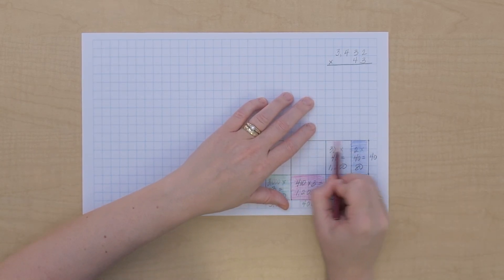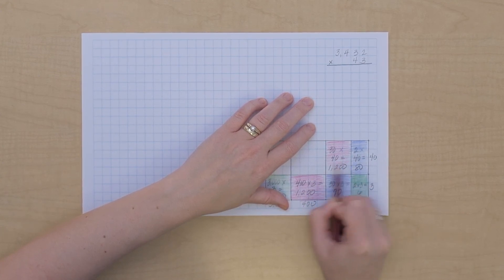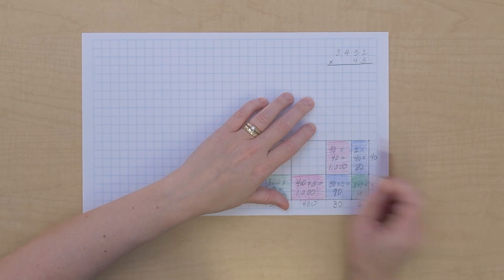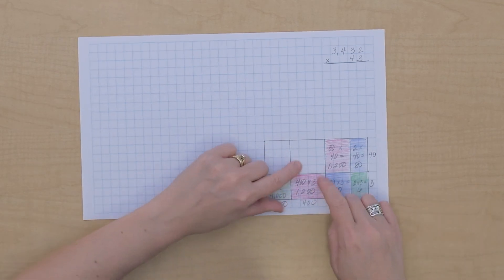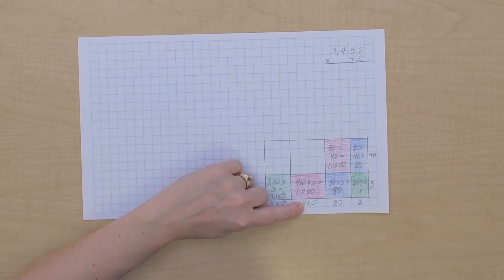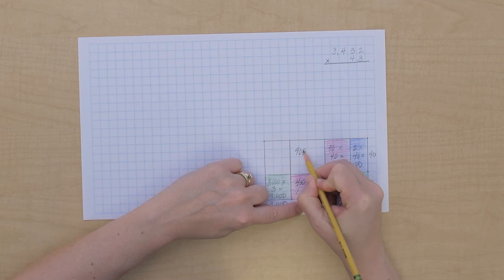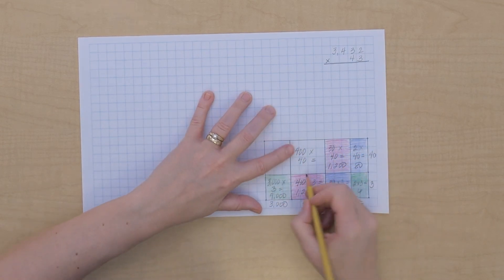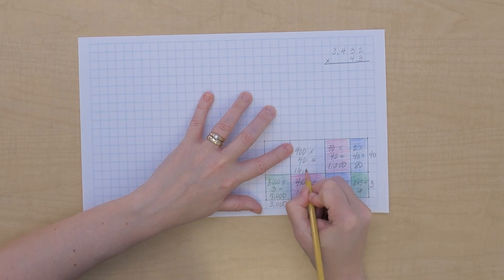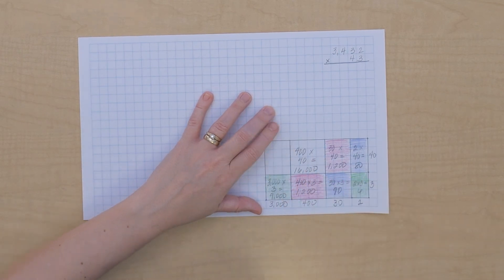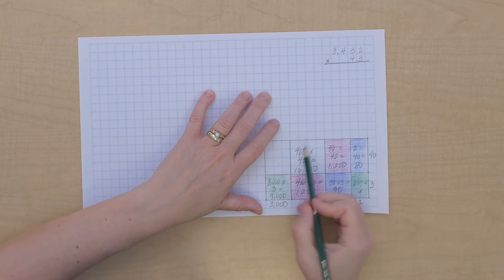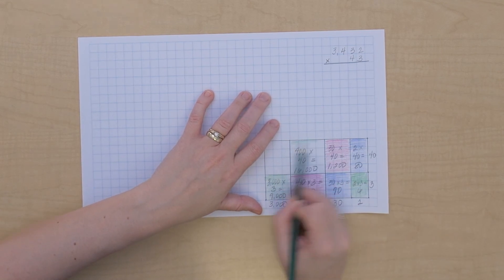Hundreds times tens gives us thousands, so we're gonna have 16,000. We'll do green for our thousands.